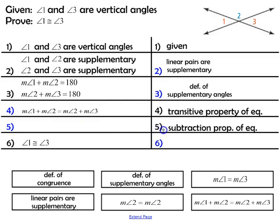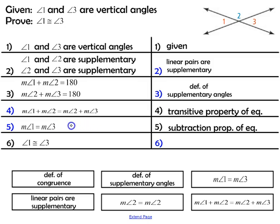Next, we use the subtraction property of equality for step 5. The subtraction property lets you subtract the same value from both sides. In step 4, the measure of angle 2 appears on both sides, so we subtract it from both sides, leaving us with the measure of angle 1 equals the measure of angle 3. Then, how do we get from that to saying angle 1 is congruent to angle 3? That's the definition of congruence.